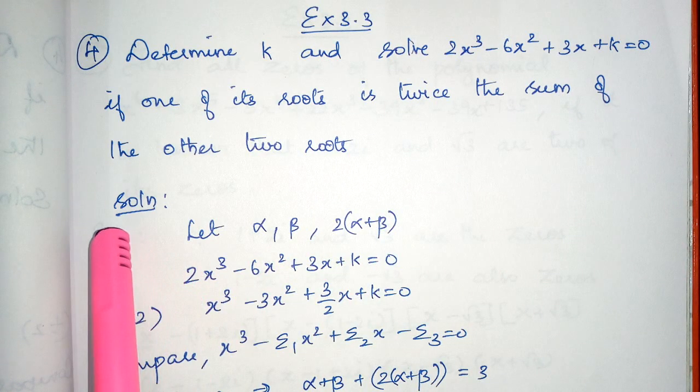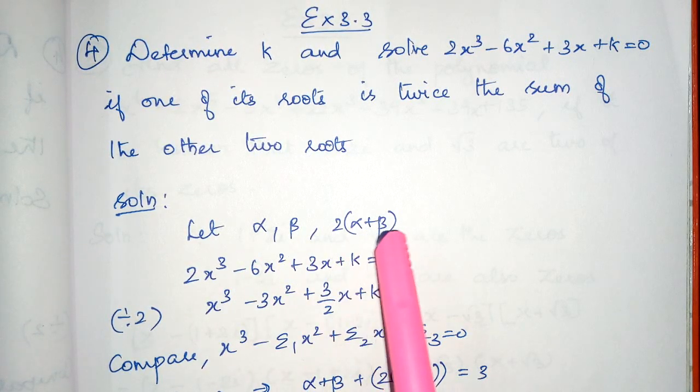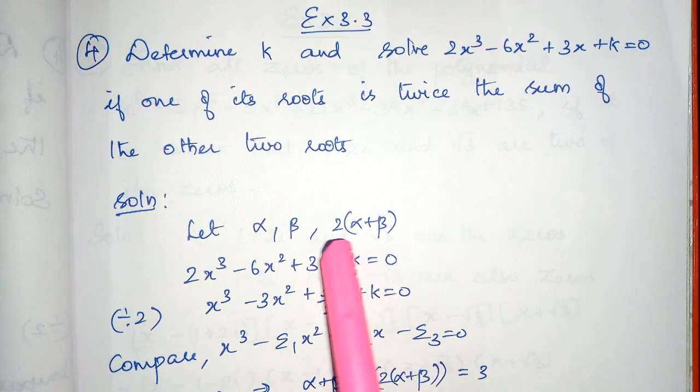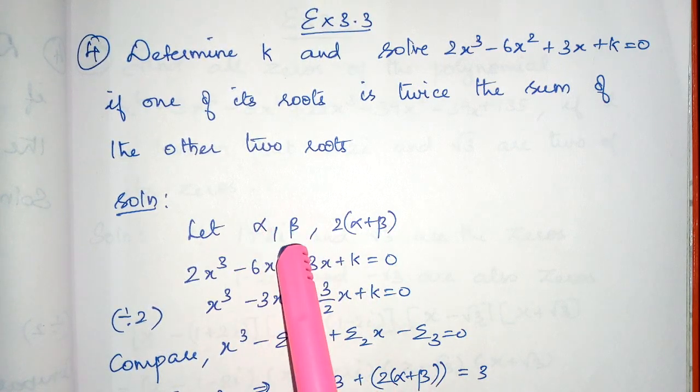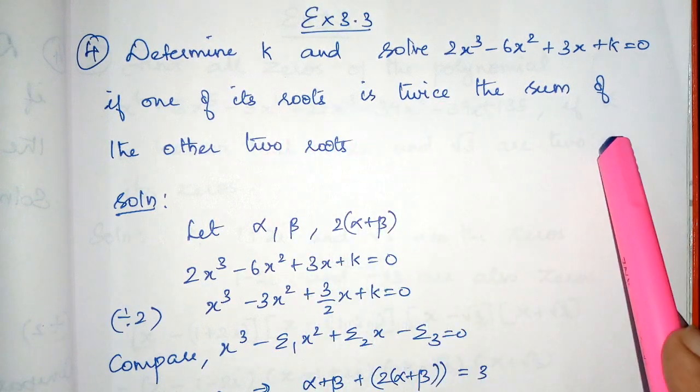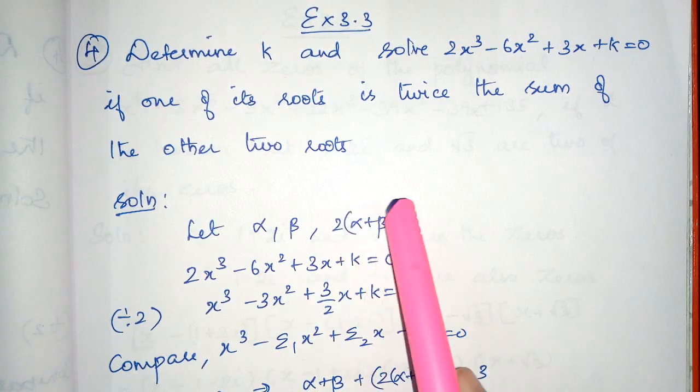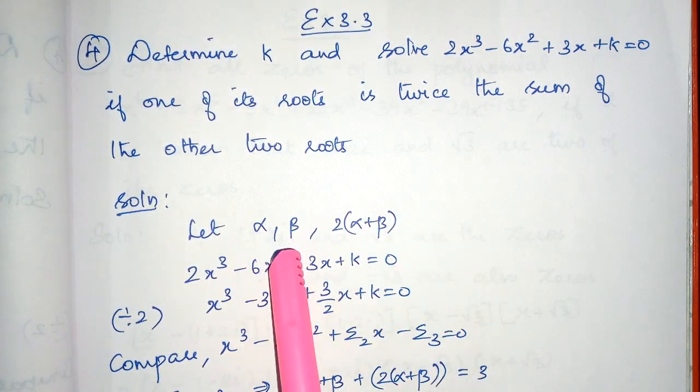See here, the solution. Let alpha, beta, 2 into alpha plus beta. So when you add the two roots and multiply by 2, you will get the third root and that is what the condition given here. Do you understand?